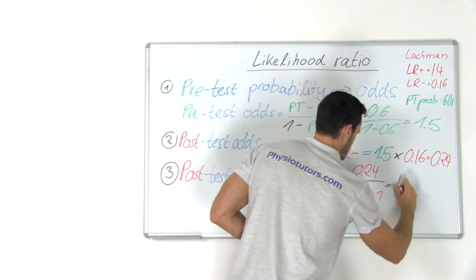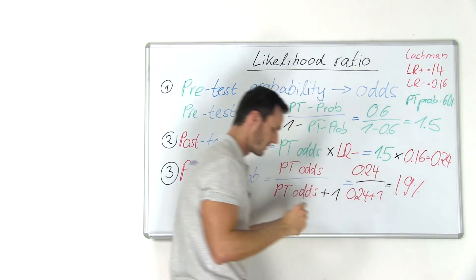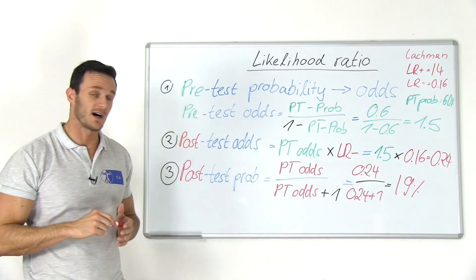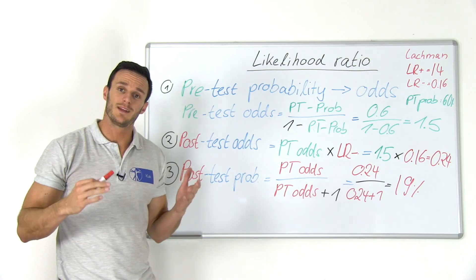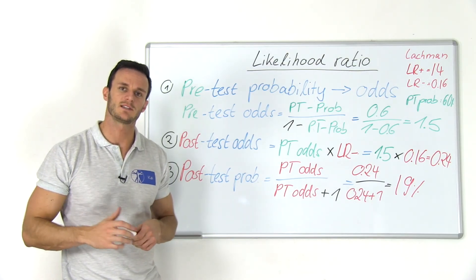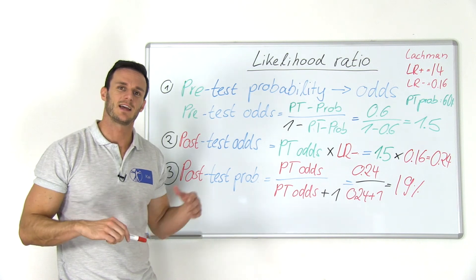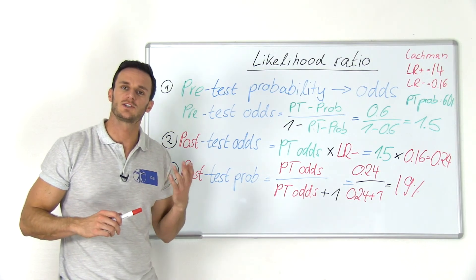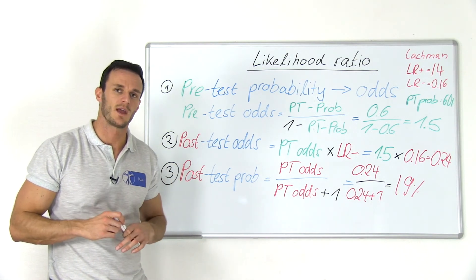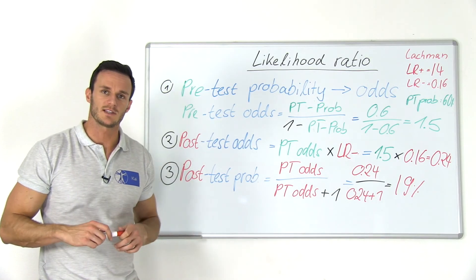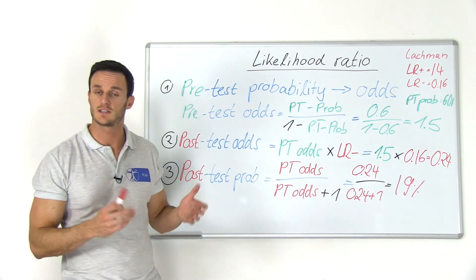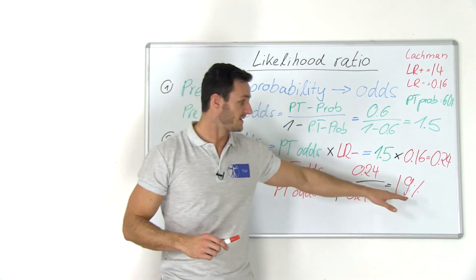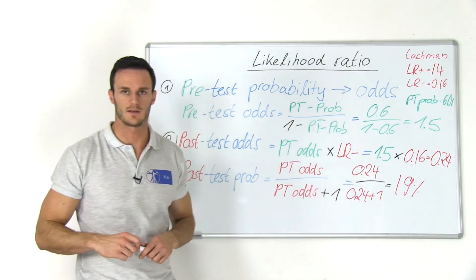So to sum it up, in case of a positive test, I started with a pre-test probability of 60% based on my anamnesis and based on my examination. And in case of a positive test, I ended up at 95% chance that the patient actually has an ACL tear. Now, in this example with a negative test, I started with a chance of 60% that my patient has an ACL tear. And in case of the negative test, the probability decreased till 19%.